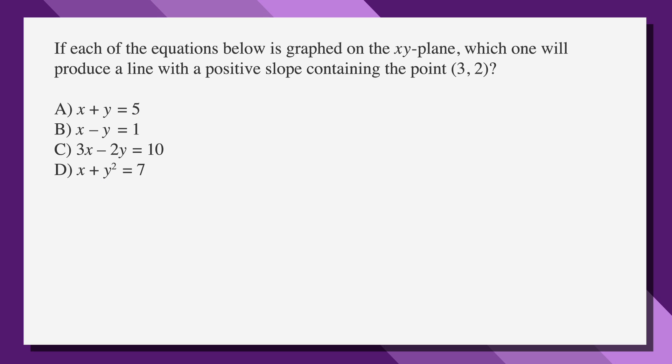If each of the equations below is graphed on the xy plane, which one will produce a line with a positive slope containing the point 3, 2? The answers are a, x plus y equals 5, b, x minus y equals 1, c, 3x minus 2y equals 10, and d, x plus y squared equals 7.